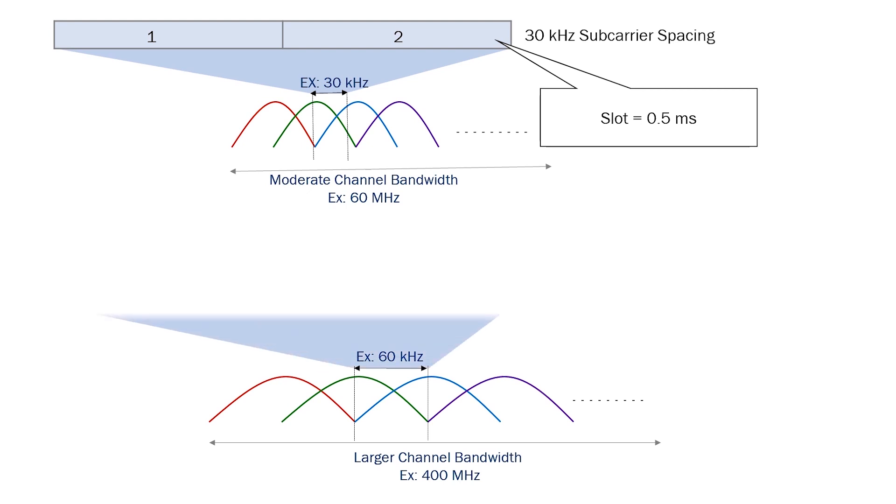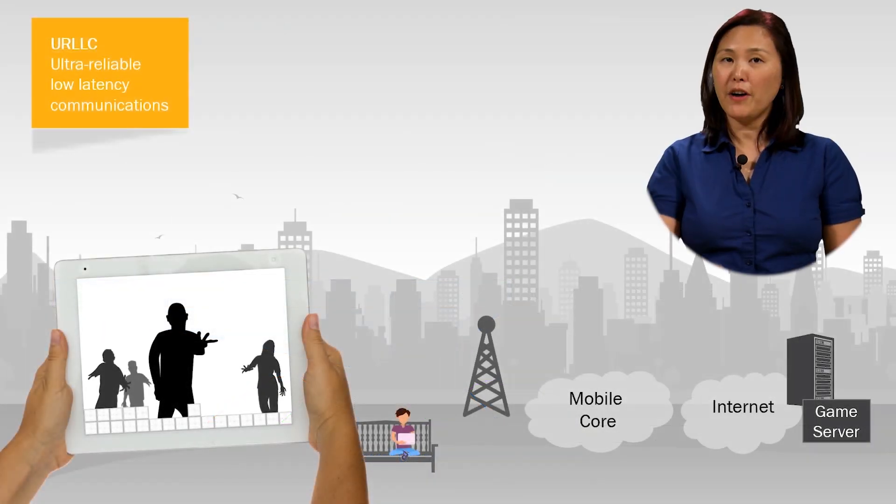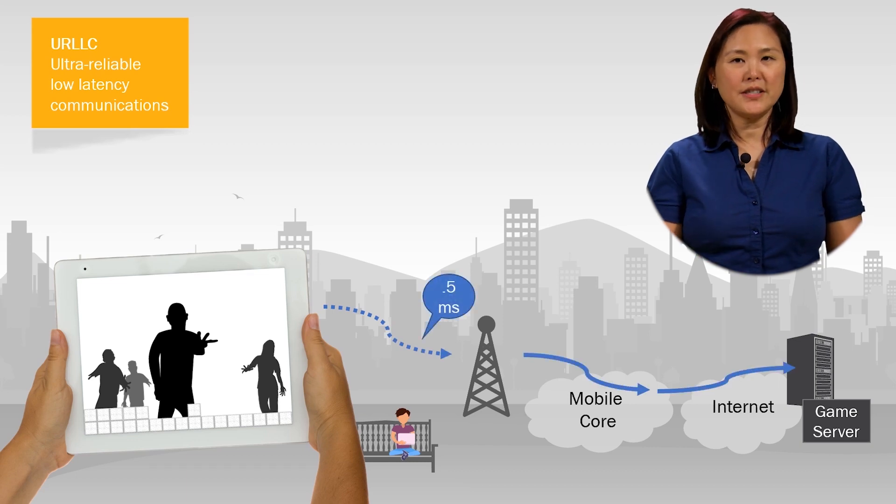If the slot time is shorter, then data can be transmitted in shorter intervals. Over-the-air latency is reduced to less than a millisecond compared to 4G. The result is quicker delivery of information. With 5G, Zombie Crusher will have faster response times. With sub-millisecond transactions, the zombies won't stand a chance.